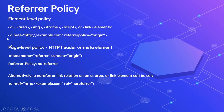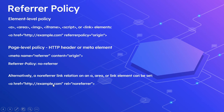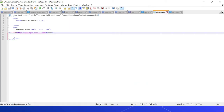The Referrer-Policy can be specified at element level or page level. At element level, for elements like area, img, iframe, script, or link, you specify it like: referrerpolicy then the value, e.g., origin. At page level, you can specify it either in the HTTP response header (Referrer-Policy then the value, e.g., no-referrer), or using a meta element in the page: meta name then referrer then the value. You can also specify rel equal to no-referrer on a link element to prevent sending any referrer data when clicking that link.